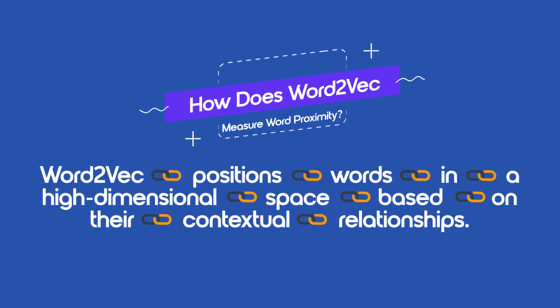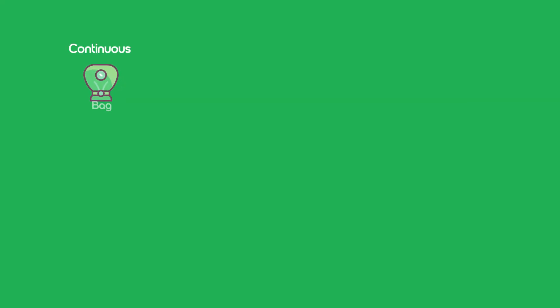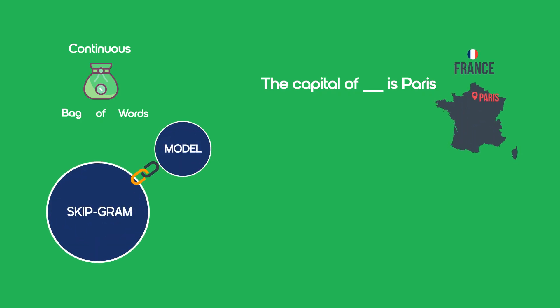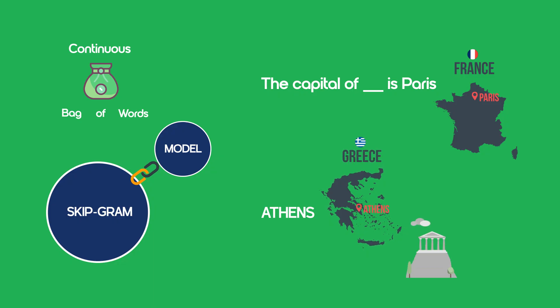How does Word2Vec measure word proximity? Word2Vec positions words in a high-dimensional space based on their contextual relationships. There are two main learning models. The first, Continuous Bag of Words, predicts a missing word based on its surrounding words — for example, given 'the capital of France is ___', the model predicts a word like Athens. The second, the Skip-gram model, predicts surrounding words based on a given word, for example Athens, learning that nearby words include Greece, Acropolis, and Olympics.